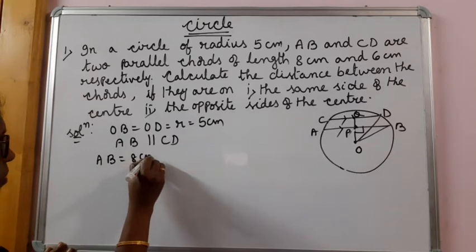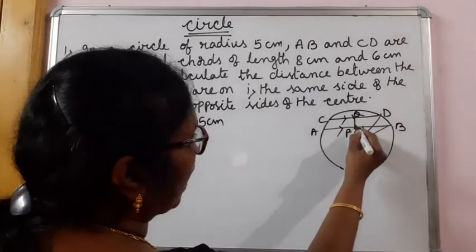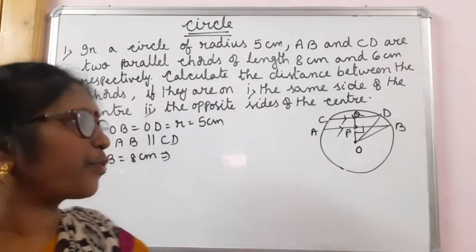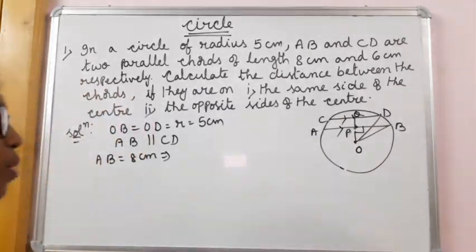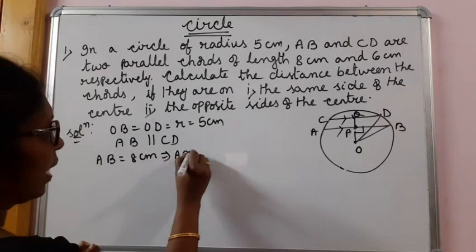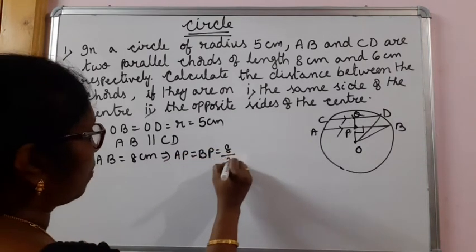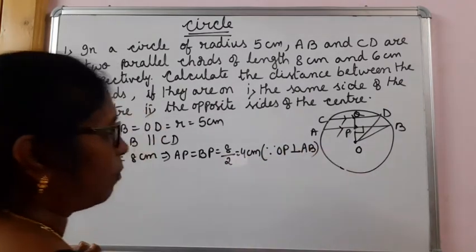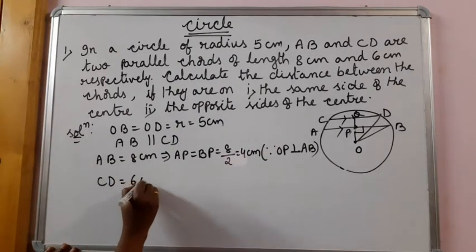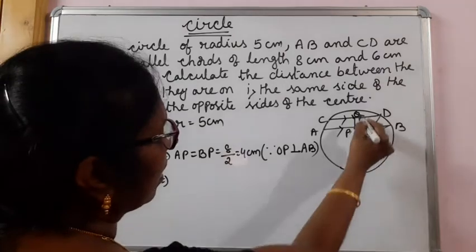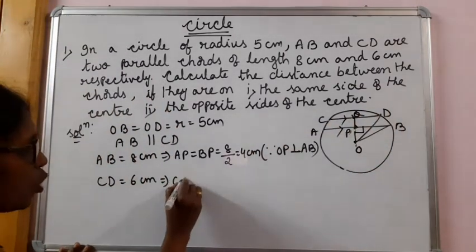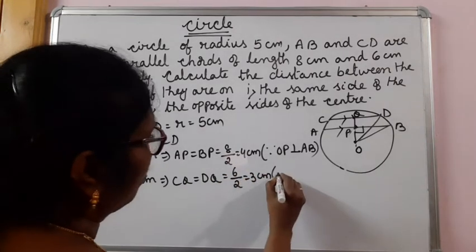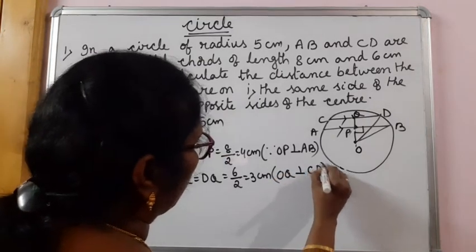Since OP is perpendicular to AB and you have learned the theorem that the perpendicular drawn from the center to the chord bisects the chord, if AB is 8 cm, then BP equals AP equals 8 divided by 2, that is 4 cm. Similarly, OQ is perpendicular to CD, and CD is 6 cm, so CQ equals DQ equals 6 divided by 2, that is 3 cm.